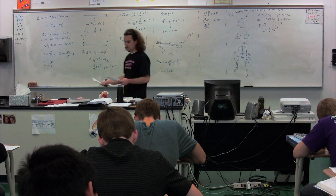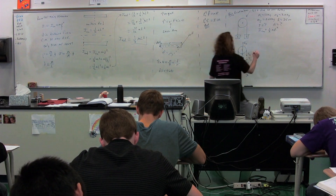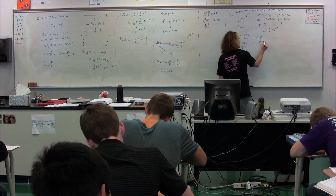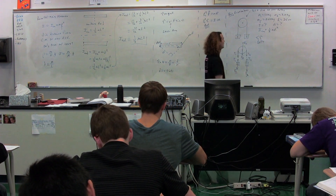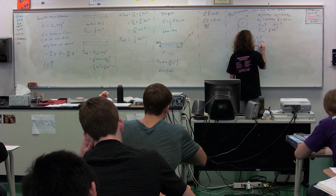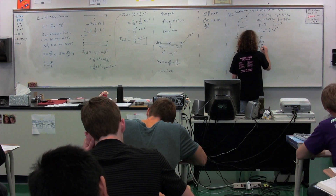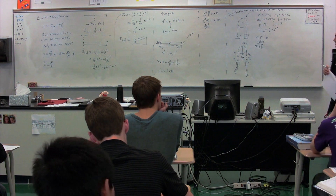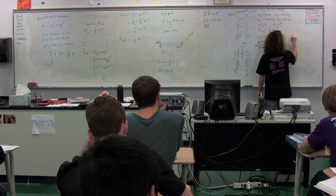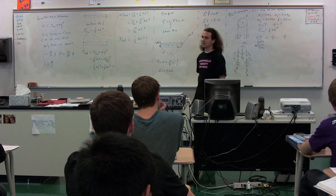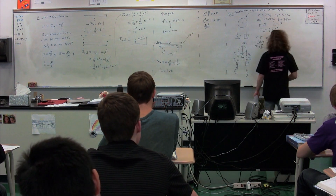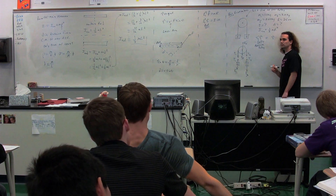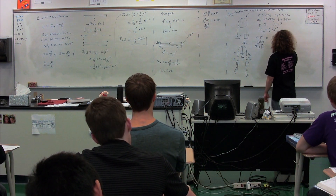We are now going to start by summing the torques on the pulley. We're summing the torques on the object — the pulley — and our axis of rotation is the middle of the pulley, the center of mass. When we sum the torques on the pulley itself, we have a torque due to tension one and a torque due to tension two.